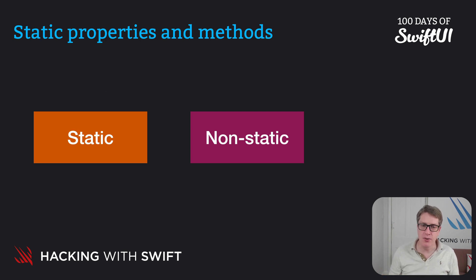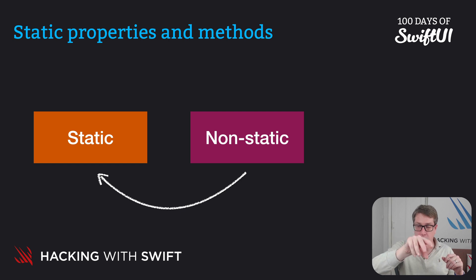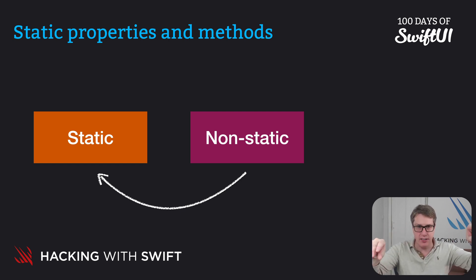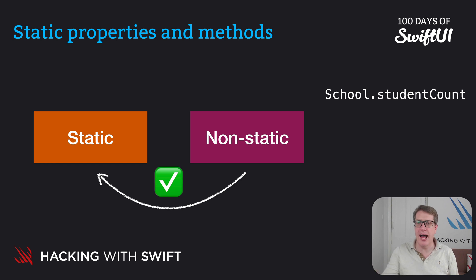The other way around, though: if you're in a non-static method — a regular method — or a non-static property, you can read the static versions. They work. Because from one of ten instances, you're reading the whole struct — that's allowed. You'd just say School.studentCount or School.add, like you would elsewhere.